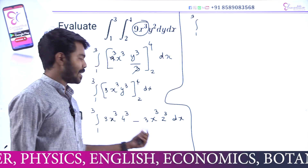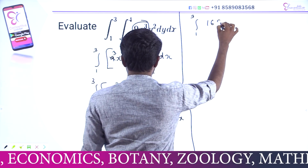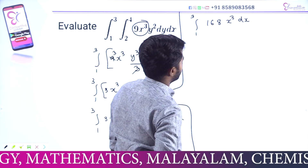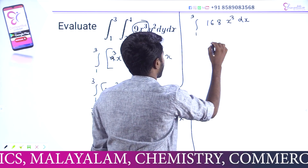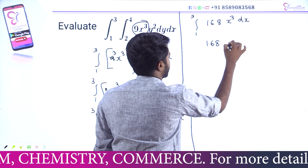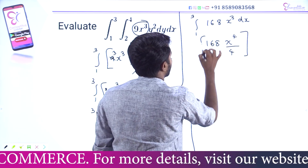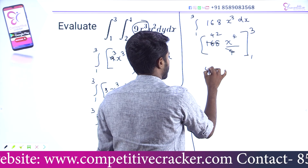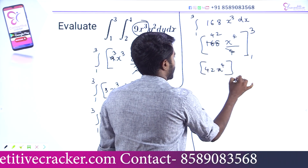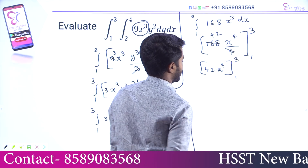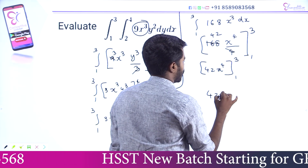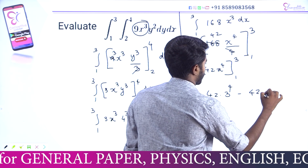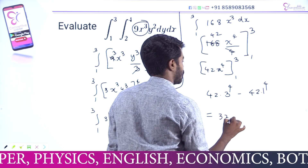Now we have to answer here. We get 168x³ dx. With respect to x, 168 is constant; integrating x³ gives x⁴ divided by 4. We apply to upper limit and lower limit: 42x⁴. At upper limit 3 raise to 4 minus 42 times 1 raise to 4, we apply to get 360.